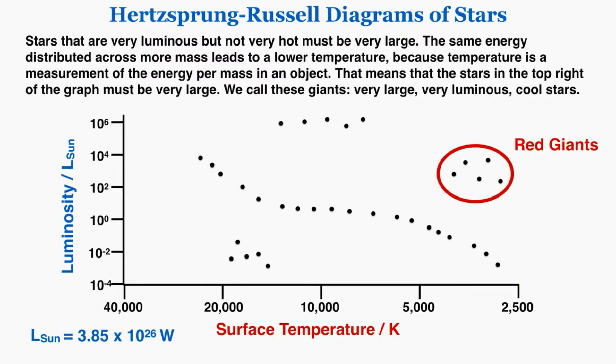In this corner over here I can see that these stars are very luminous, they have a high luminosity number, but they're not very hot. This must mean that they're very large. The same energy distributed across more mass leads to a lower temperature. The stars in the top right of the graph must be very large. We call these stars giants—they're very large, very luminous, but also relatively cool.